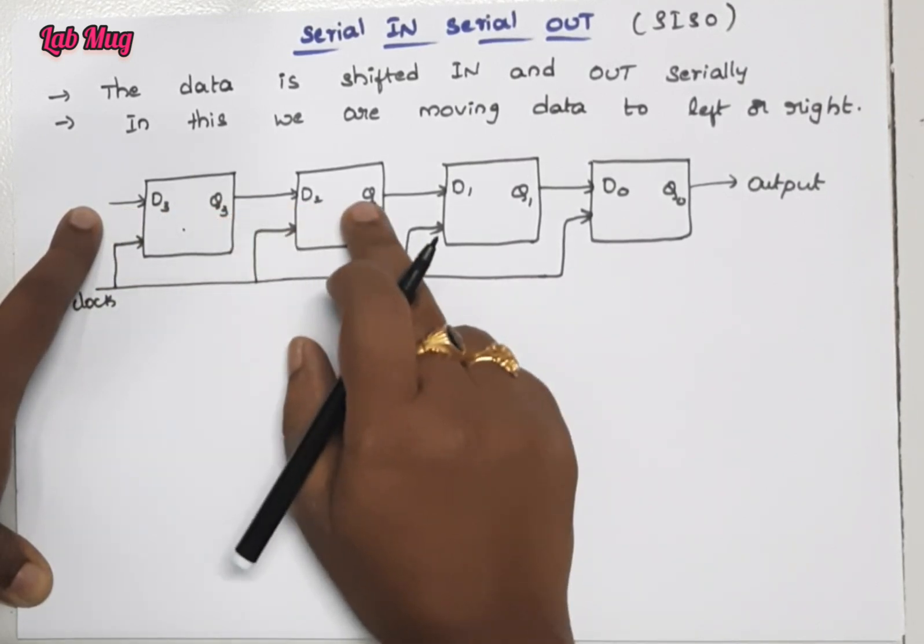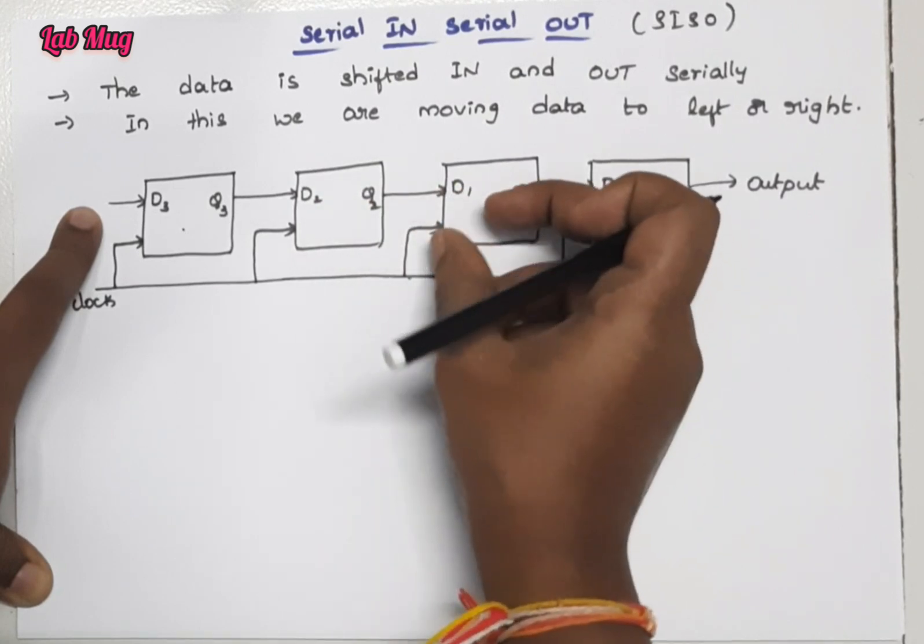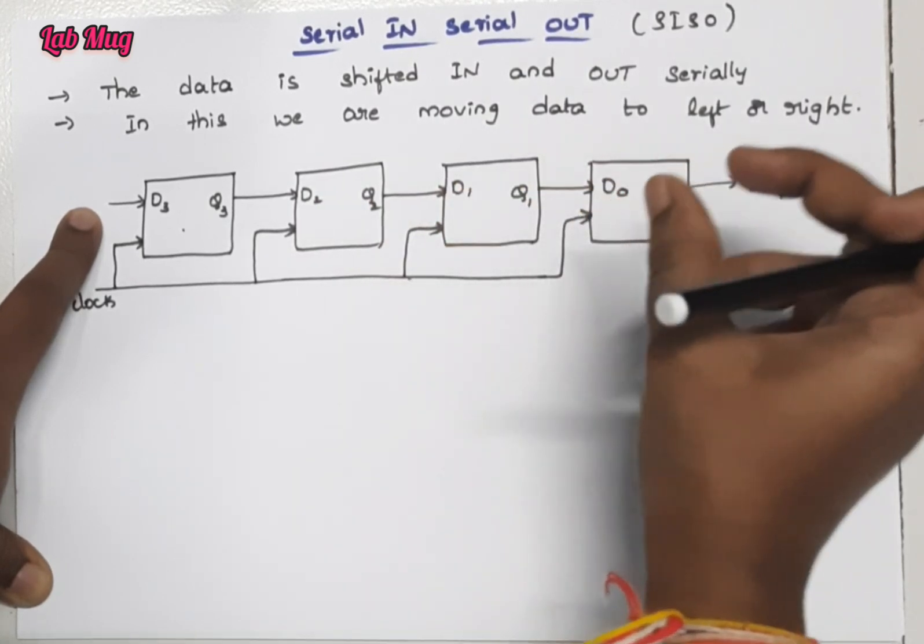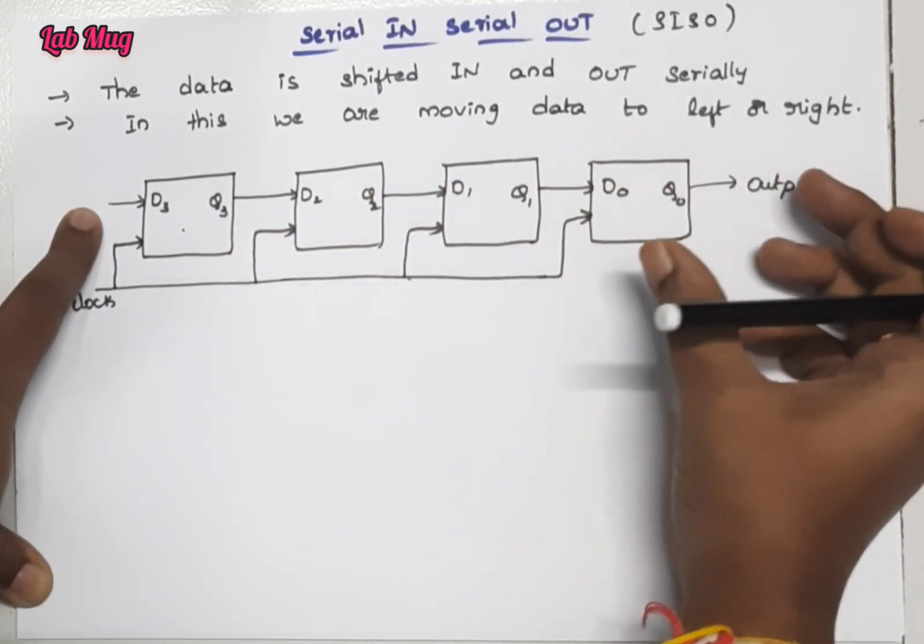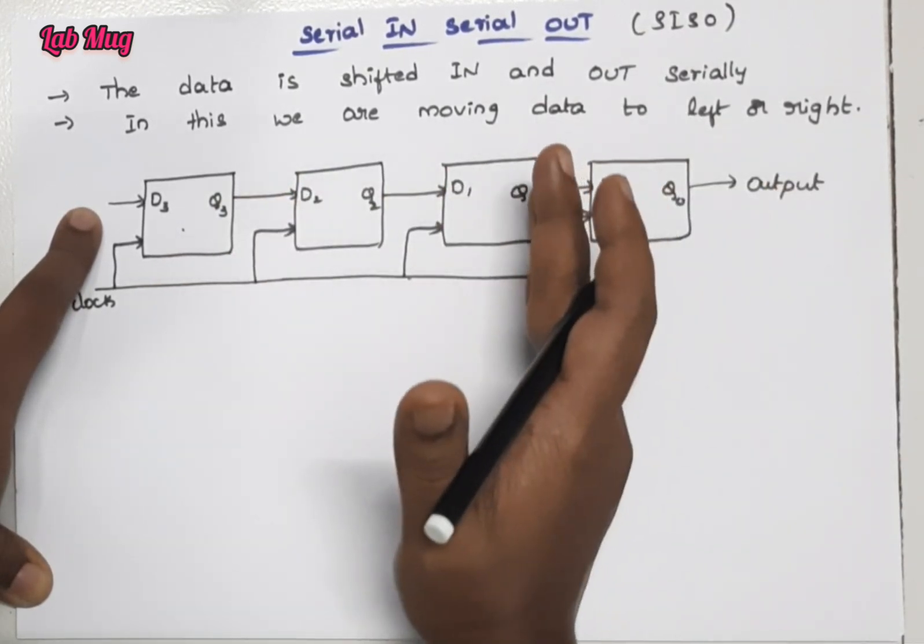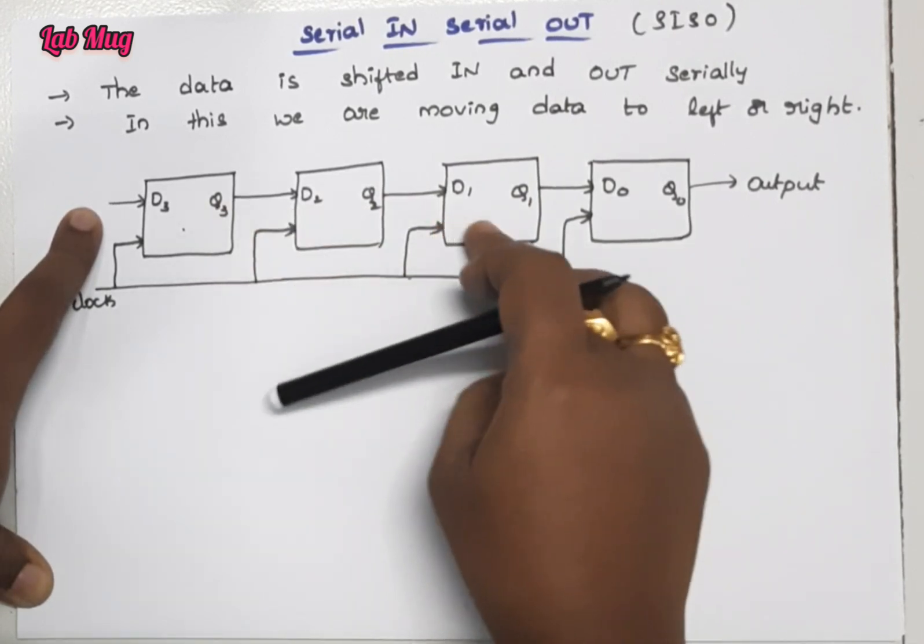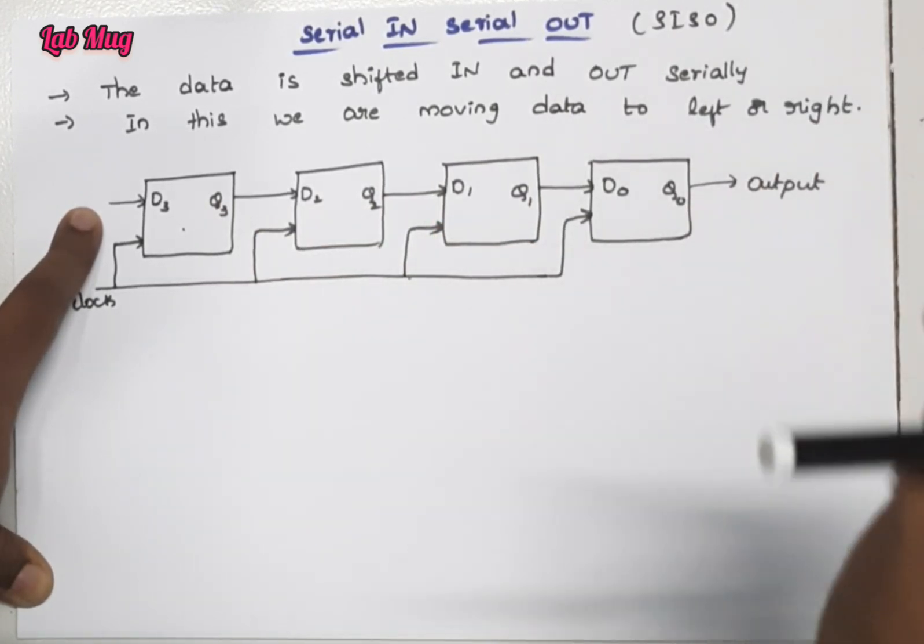One by one the input becomes the output. The output we get is also one by one with the input values. That is the meaning of serial output.